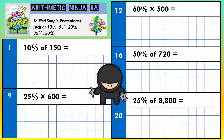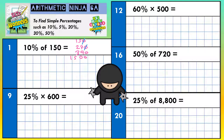Some numbers have a zero on the end, some numbers don't, and some numbers are decimals. So if you've got numbers like 150, 270, 390, 1,500 — if there is a zero on the end, to find 10% you can just knock a zero off. So 10% of 150 is 15, 10% of 270 is 27, 10% of 390 is 39, and 10% of 1,500 is 150. But that doesn't work if there are decimals involved.